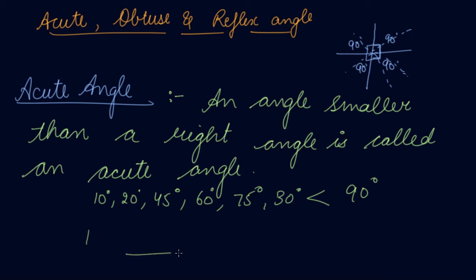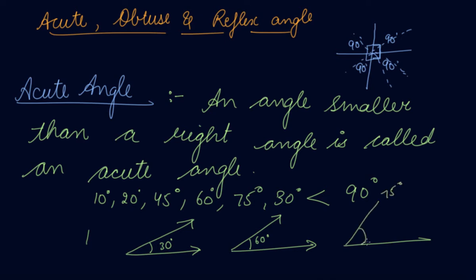You make an acute angle like this — this might be a 30 degree angle, this might be a 60 degree angle, or this might be a 75 degree angle. So if this is a triangle, then this is an acute angle because this angle might be 45 degrees. You can take the protractor and check the angle, and after practicing some angles, by seeing only you will be able to find out whether it is acute, obtuse, or reflex.